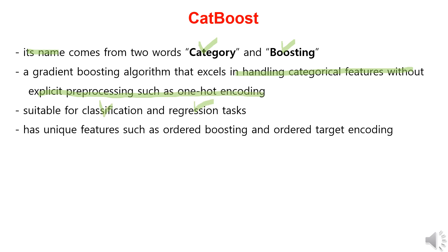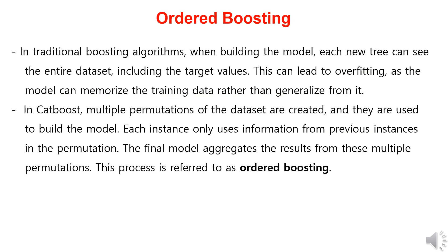In particular, the CatBoost model has unique features such as ordered boosting and ordered target encoding. In traditional boosting algorithms, when building the model, each new tree uses the entire dataset including the target values. This can lead to overfitting, as the model may memorize the training data rather than generalize from it.